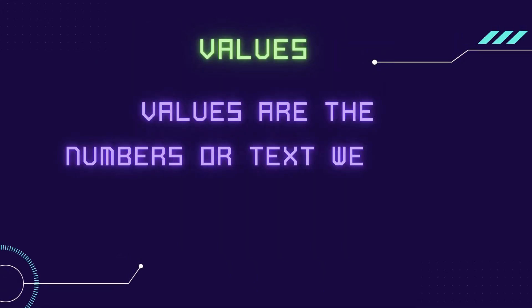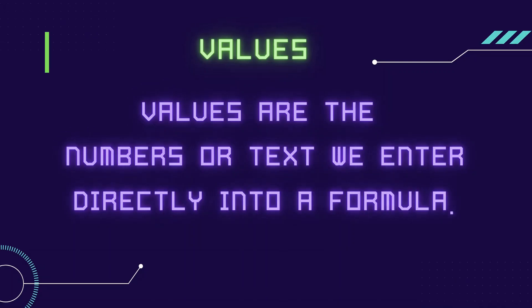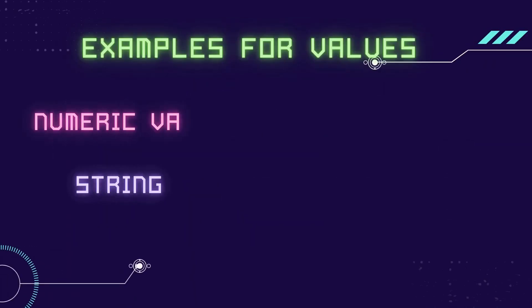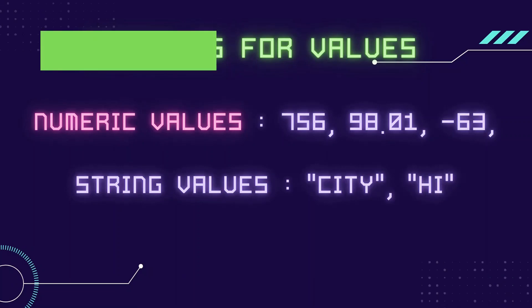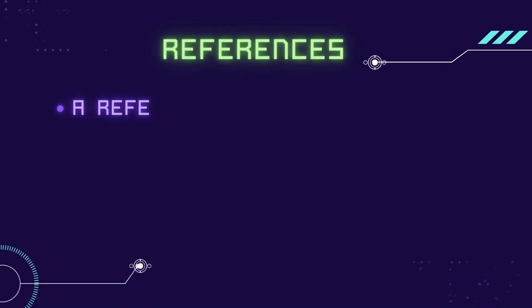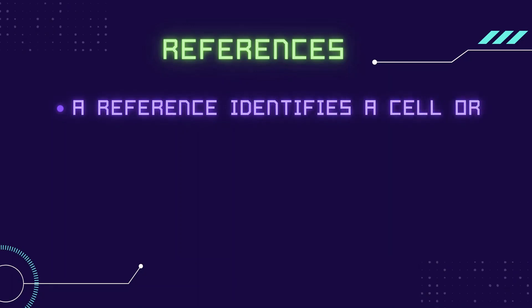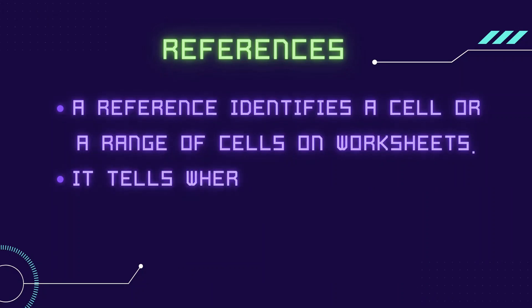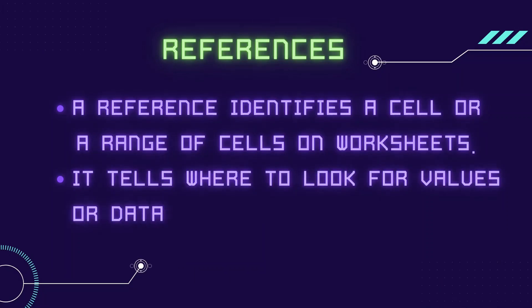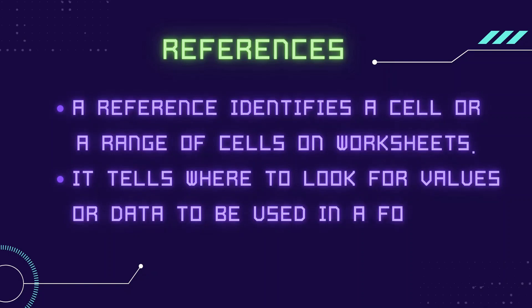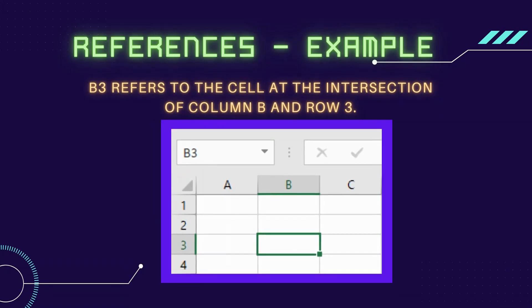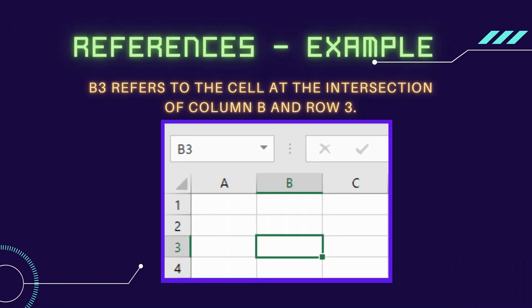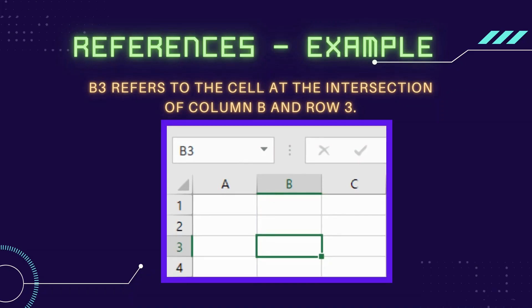Values are the numbers or text we enter directly into a formula. A reference identifies a cell or a range of cells on a worksheet. It tells Excel where to look for values or data to use in our formula. For example, B3 refers to the cell at the intersection of column B and row 3.